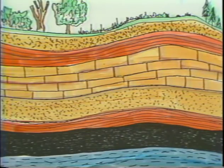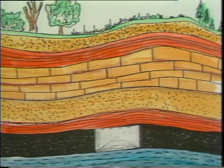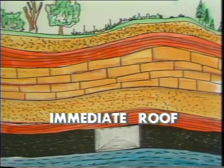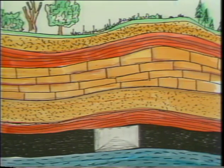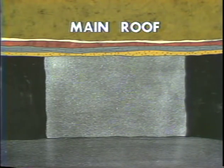To better understand what causes a mine roof to fall, it is necessary to know something about the strata or overburden of rock and Earth that overlies the coal seam. When a coal seam is mined, open areas such as haulage ways and rooms are created. The roof directly above the coal seam is called the immediate roof. This roof is made of layers of rock that can vary in thickness from a few inches to several feet. The strata above the immediate roof is called the main roof, which can range in thickness from several feet to many thousands.